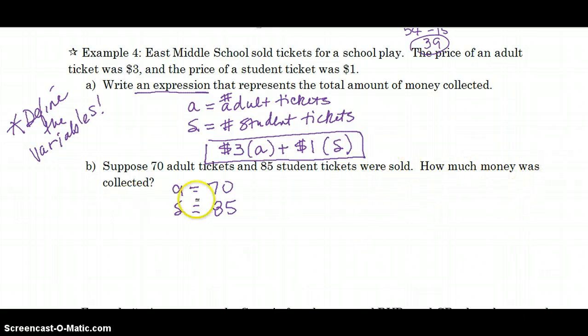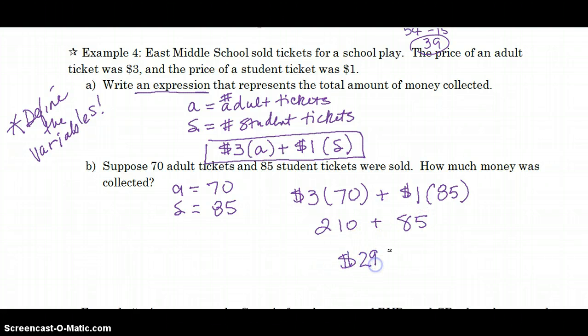Now, how much money was collected? So, at $3 for each ticket, and there were 70 of those, and $1 for the 85 student tickets, that's going to give us $210 plus $85, a total of $295.